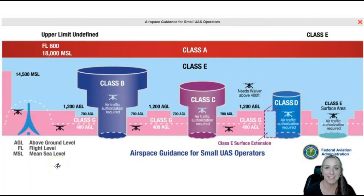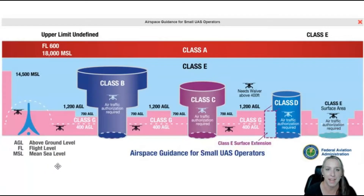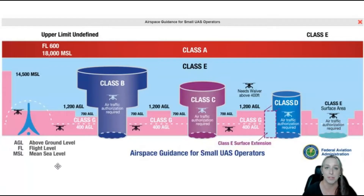What are the different classes of airspace in the National Airspace System? This graphic, taken from the FAA, shows the different classes of airspace and what it looks like from a 3D perspective. In the National Airspace System, we have six different classes.